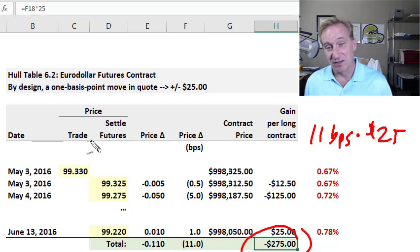In this case, it's a long position. The quote price went down because the interest rate—specifically three-month LIBOR—went up. So this long position experiences a loss of $275.